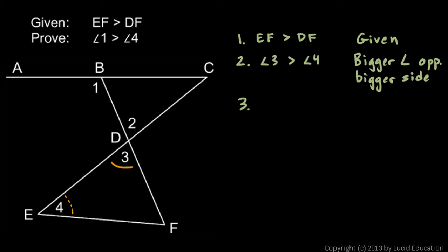Next step: we said that angles 2 and 3 have to be equal because they're vertical angles. So Step 3: angle 2 equals angle 3. The reason is vertical angles are equal.